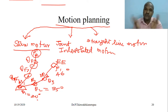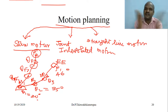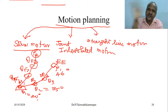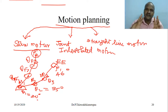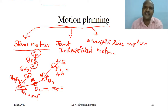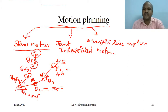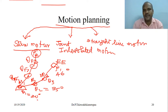Slow motion means each joint takes its own timing — not all the same. Each joint has its own timing to reach its final position. That means all joints rotate with different accelerations and decelerations — it accelerates and then decelerates to reduce the speed.